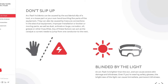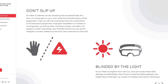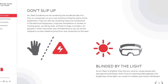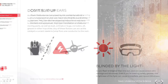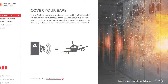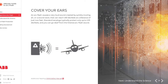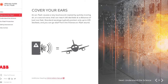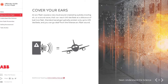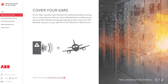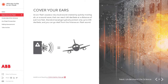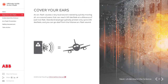An arc flash is brighter than the sun and can cause severe skin damage and blindness. Even if you are wearing safety glasses, the brightness of the light can cause immediate permanent blindness. An arc flash causes a very loud sound by quickly moving air — a sound wave that can reach 140 decibels at a distance of just 2 feet. Standard earplugs typically protect only up to 105 decibels, and you can go deaf from the intense arc flash sound.